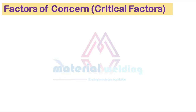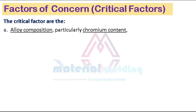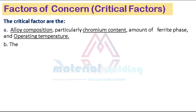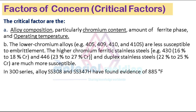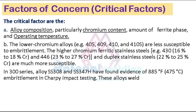The critical factors for 885 degrees Fahrenheit embrittlement are: alloy composition, particularly chromium content; amount of ferrite phase; and operating temperature. The lower chromium alloys, for example SS 405, SS 409, SS 410, and 410S, are less susceptible to embrittlement. The higher chromium ferritic stainless steels, for example SS 430 containing 16% to 18% chromium, and SS 446 containing 23% to 27% chromium, and duplex stainless steels with 22% to 25% Cr, are much more susceptible.